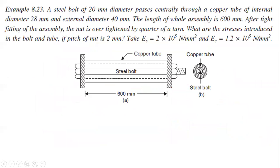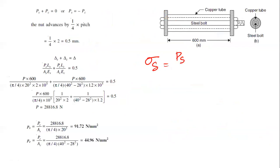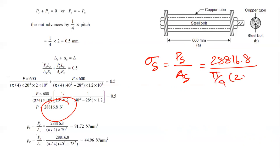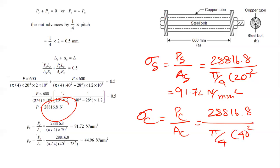Now we find the stress values. Stress at steel equals load divided by area of steel: 28,816.8 N divided by π/4 × 20² = 91.72 N/mm². Stress at copper tube equals load divided by area of copper tube: 28,816.8 N divided by π/4 × (40² − 20²) = 44.96 N/mm².